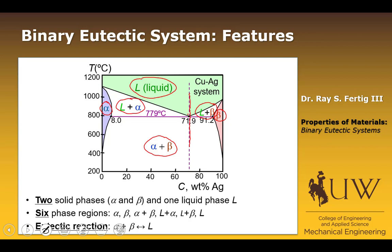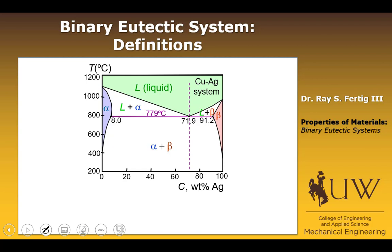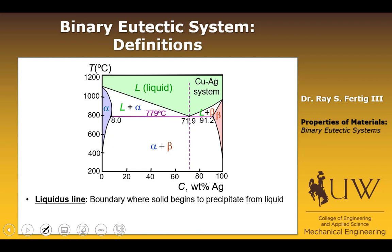Let's work through some definitions. The first is one we've seen from isomorphous phase diagrams: the liquidus line. That separates the region of pure liquid from where a solid begins to precipitate out. In this particular case there are two liquidus lines on the diagram.